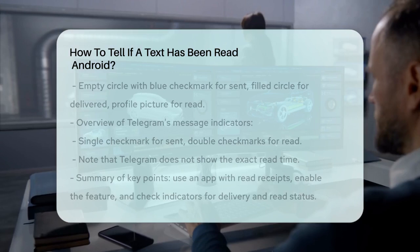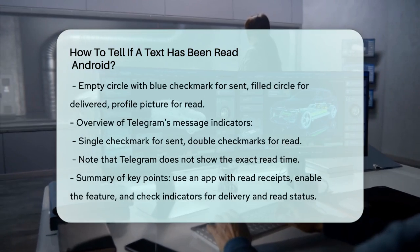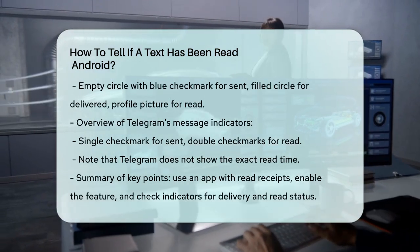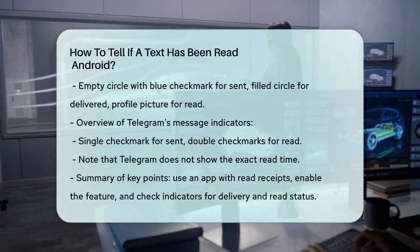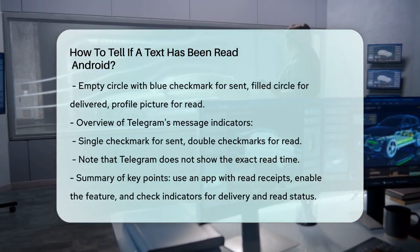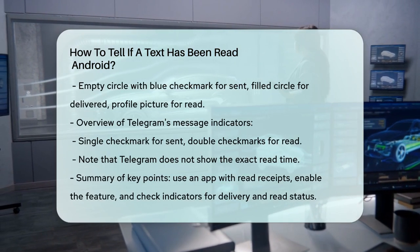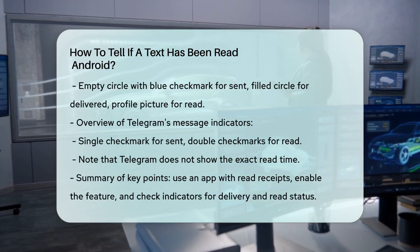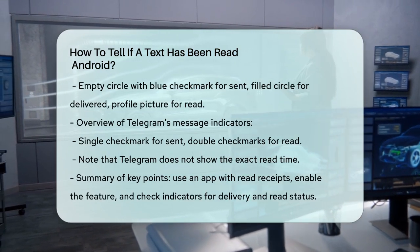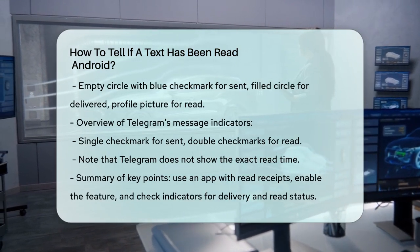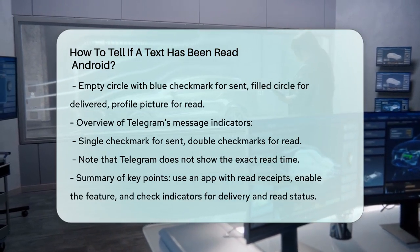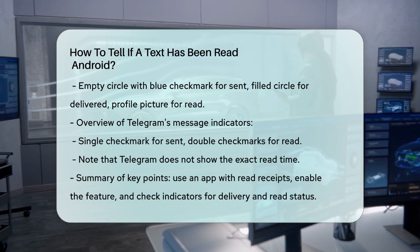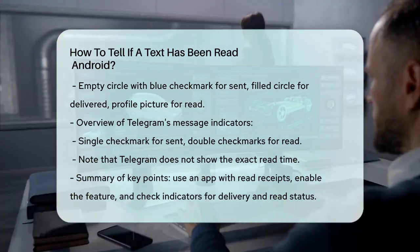On Telegram, a single check mark appears when you send a message, and it turns into double check marks when the recipient reads it. However, Telegram doesn't offer the option to view the exact time the message was read.